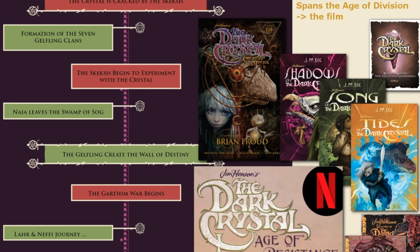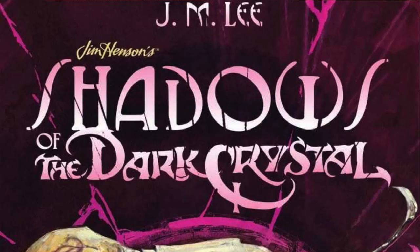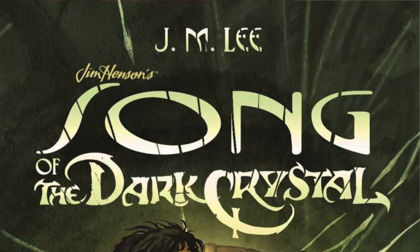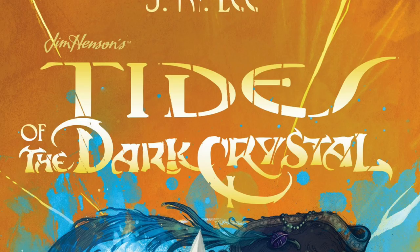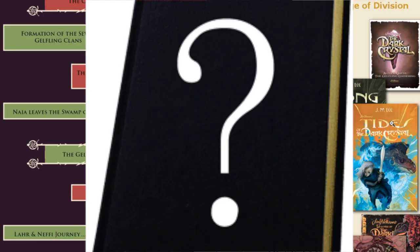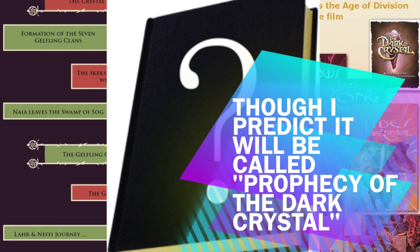After the first three creation myth volumes, here's where I'm going to disagree with some people on what's best to read next. You have a long period within the Age of Division until you hit the four young adult novels — Shadows of the Dark Crystal, Song of the Dark Crystal, and Tides of the Dark Crystal. The fourth one we don't know the name of yet, and Tides hasn't even been released — that's coming out Christmas 2018.